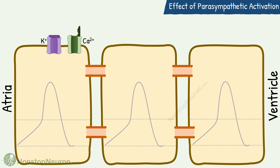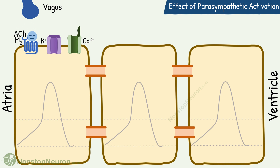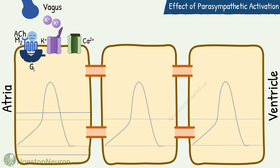Now let's see the effect of parasympathetic activation on this. Parasympathetic innervation of the AV node is by the vagus nerve. It releases acetylcholine, which binds with M2 receptors on the cell membrane of the AV node. The M2 receptor is a Gi protein-coupled receptor. Its stimulation produces several effects: first, it opens potassium channels, so potassium leaves the cell, and the exit of positive ions makes the resting membrane potential more negative. Second, it closes calcium channels.